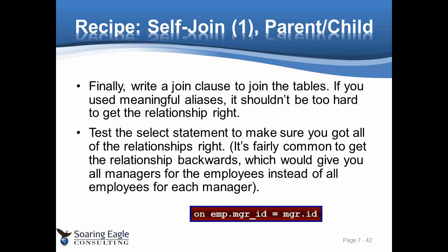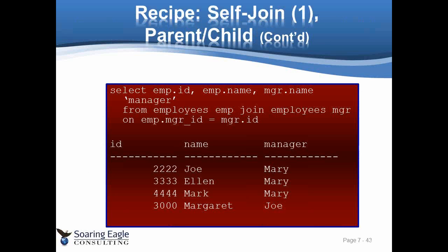It is fairly common to get this relationship backwards. When you do that, Mary works for Joe, Mary works for Bob, Mary works for everybody except herself. When we get it correctly, Joe works for Mary, Ellen works for Mary, Mark works for Mary, and Margaret works for Joe. Note we are missing a row of data — Mary doesn't show up because the self-join works just like a regular join, and there's no matching row for Mary. We'll be evaluating this as we go to outer joins.